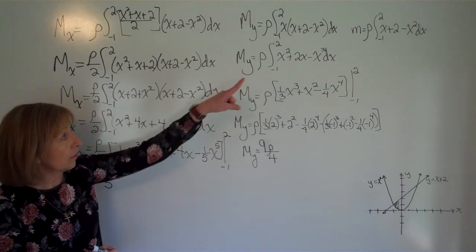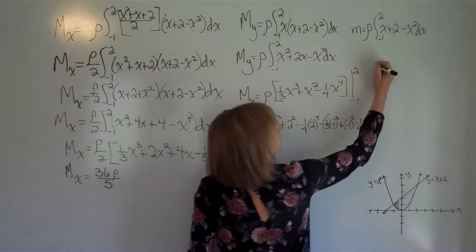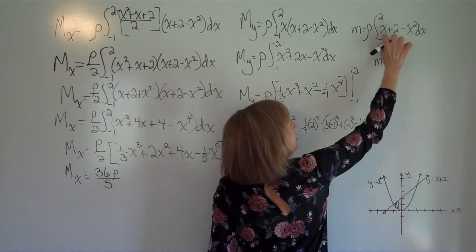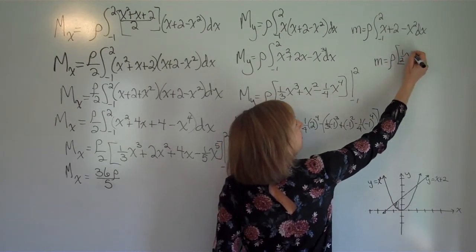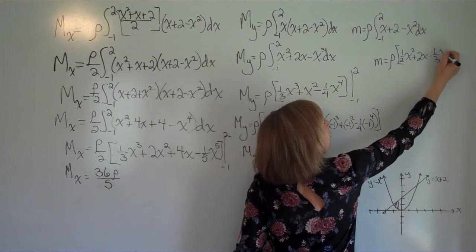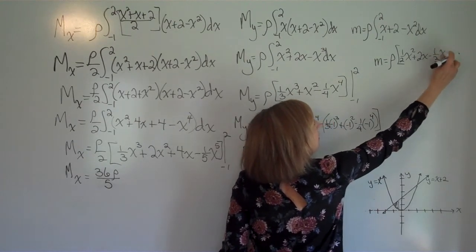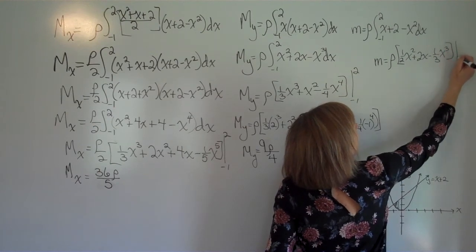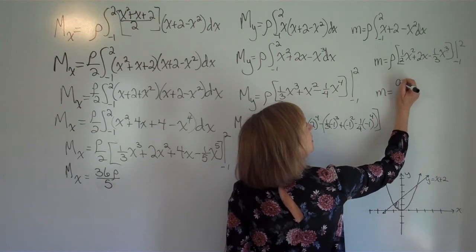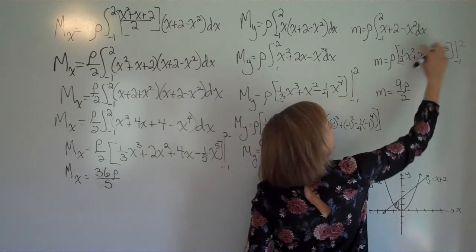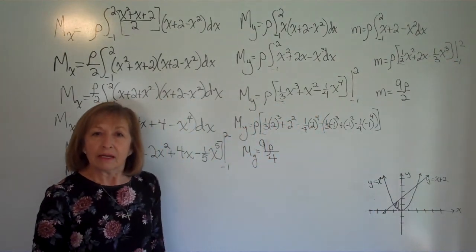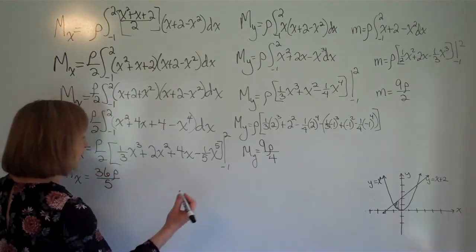For the total mass, integrate (x + 2 − x²) dx term by term: rho times [(1/2)x² + 2x − (1/3)x³] evaluated from −1 to 2. Plugging in 2 through the x's minus plugging in −1 through the x's gives mass m = 9rho/2.